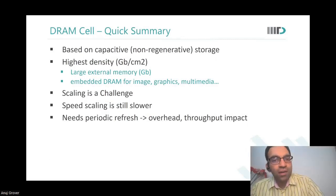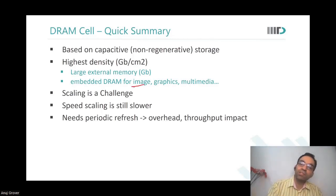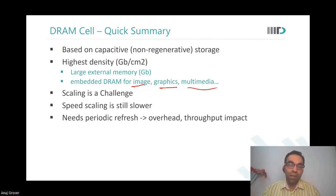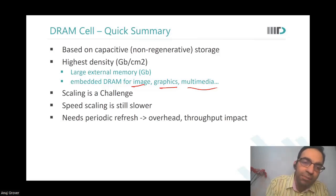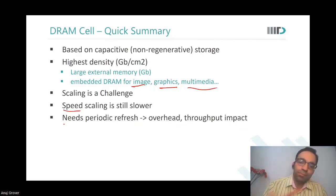To summarize: the DRAM cell is based on capacitor storage, which is non-regenerative in nature. It has very high density — gigabits per centimeter squared — and is used in imaging, graphics, and multimedia processors where on-chip DRAM is needed. However, there is a challenge in scaling DRAM capacitors, and parasitics become more important in advanced technologies, causing speed to take a hit. DRAM also requires periodic refresh.